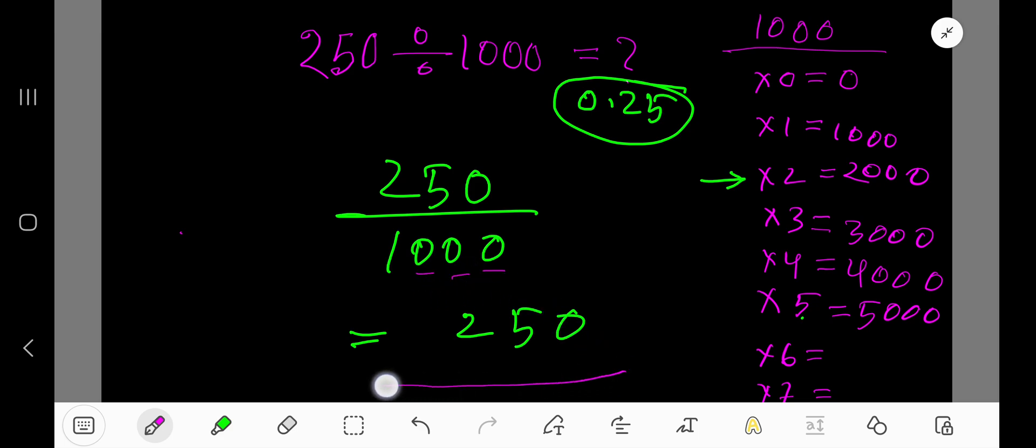Now move decimal from right to left, 3 digits: 1, 2, 3. Yeah. That is 0.250 means 0.25. After decimal, you can take any number of 0. Answer.